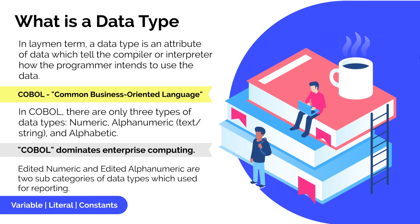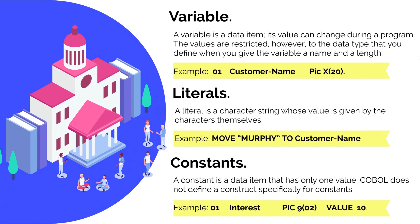Now let's talk about variables, literals, and constants. A variable is a data item whose value can change during a program. Always remember there is a restriction — a value can change only as per the data type. For example, if you have defined a numeric item, it can only have a numeric value. If it's alphanumeric, it can have both numeric and non-numeric values. For example, a customer name defined as X of 20 is alphanumeric, so it can hold both types of data with a size of 20.